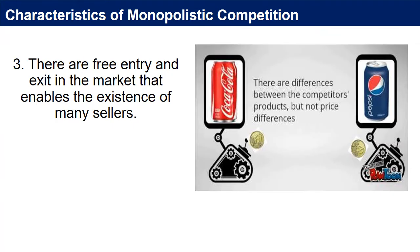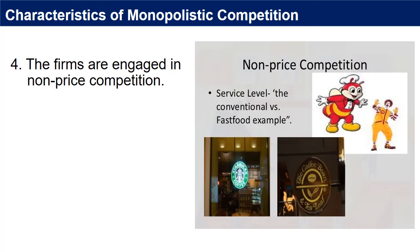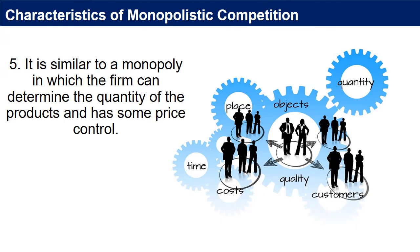3. There are free entry and exit in the market that enables the existence of many sellers. 4. The firms are engaged in non-price competition. This involves the advertising of a product's appearance, quality, or design, which serves to shift the demand curve to the right without sacrificing the prices. 5. It is similar to a monopoly in which the firm can determine the quantity of the products and has some price control.